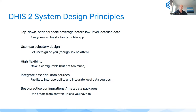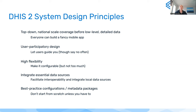Moving to system design principles — not about the software per se, but about how you design the DHIS2 system. One key principle is a top-down national scale coverage approach before focusing on low-level detailed data. Always try to get national scale before going too deep into any vertical or specialized disease area. In international development there's been 'pilotitis' — a famous diagram from Uganda shows over a hundred different apps running in different districts for particular diseases, run by various NGOs.